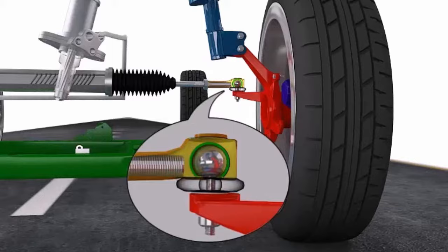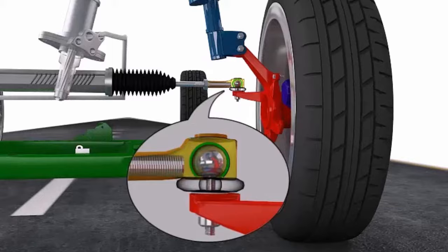the nylon insert that surrounds the ball in the socket wears out, causing looseness in the joint. This can cause clunking noises and alignment problems, which can cause the tire to wear more rapidly.